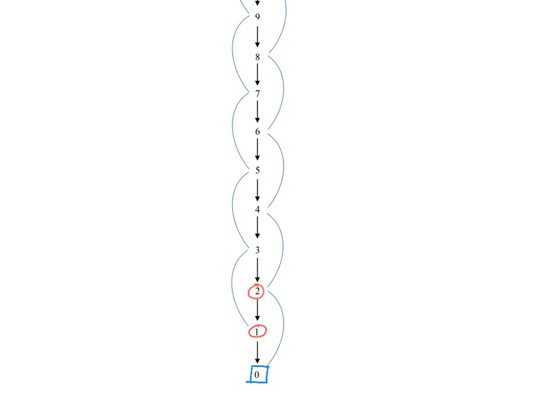Now let's analyze position three. Every way of playing from three — taking one or taking two — ends up in a hot position. Every way of playing from three ends up in a hot position. That's what makes it a cold position. So three is cold.